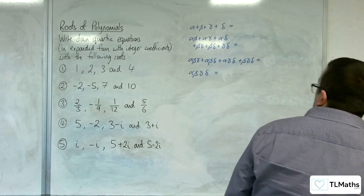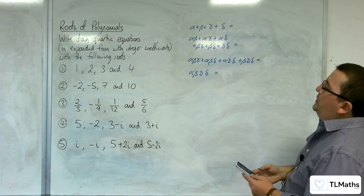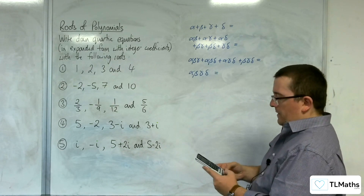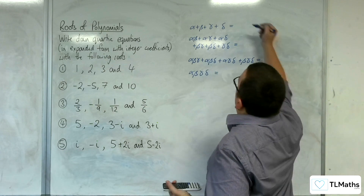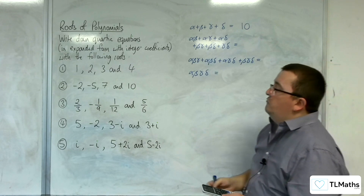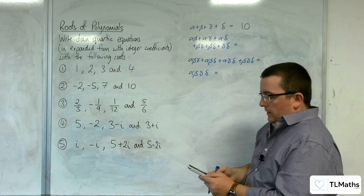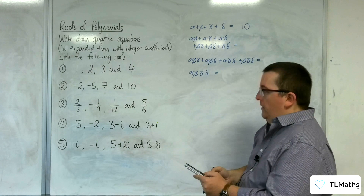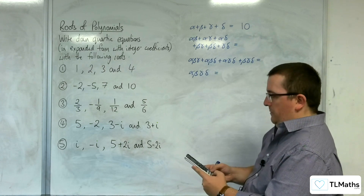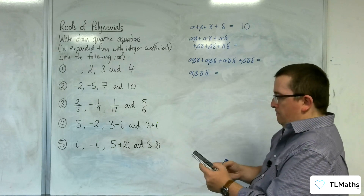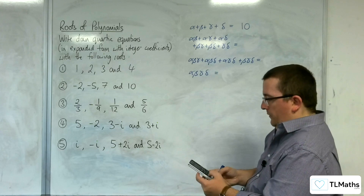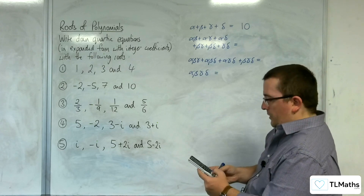Let's have a look at number 2. First of all, we've got to add them together: minus 2, take away 5, plus 7, plus 10, and that gets us 10. Then we've got the sum of the product pairs: minus 2 times minus 5, then minus 2 times 7, plus negative 2 times 10, then minus 5 times 7, then minus 5 times 10, and then 7 times 10.